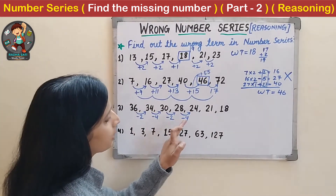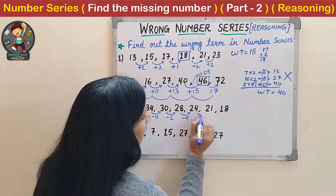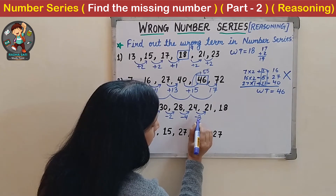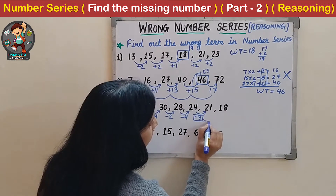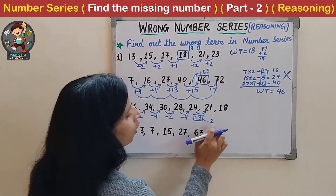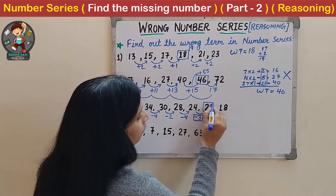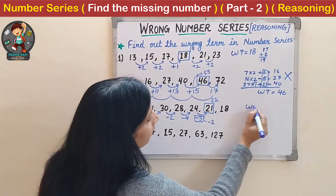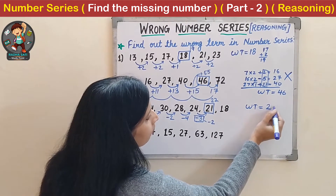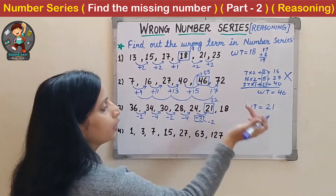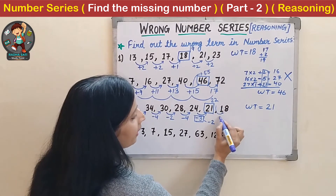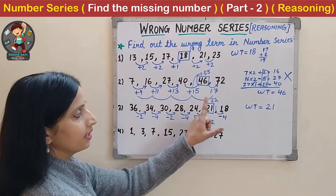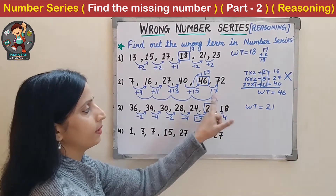Next should again be minus 2, but it's minus 3. So instead of minus 3 it should be minus 2. So 24 minus 2 gives 22. The wrong term is 21 - instead of 21 it should be 22. Check: 22 minus 4 is 18. So wrong term is 21, it should be 22 in place of 21.